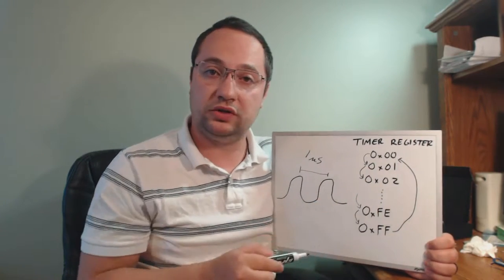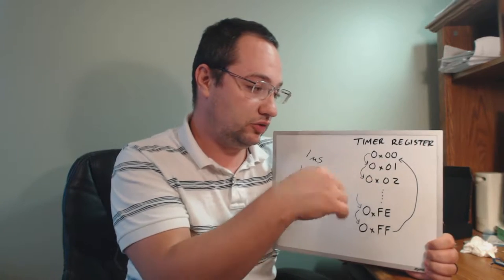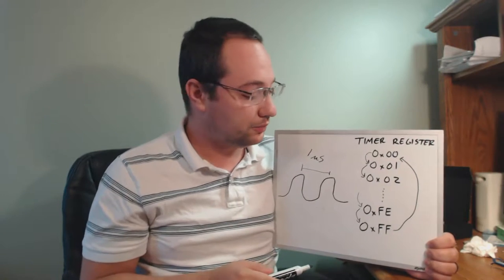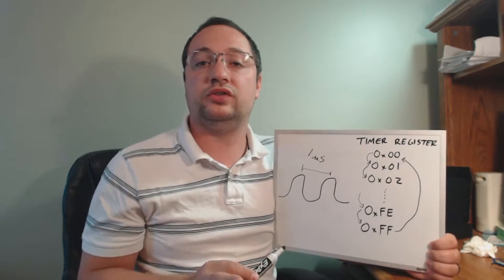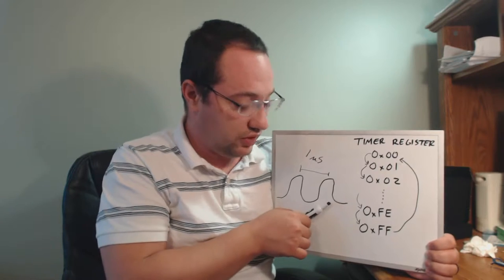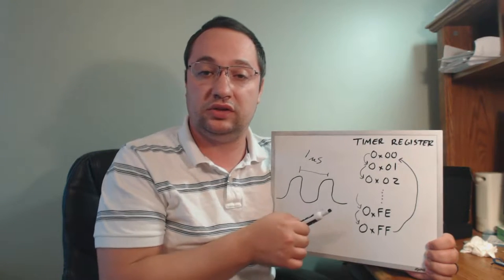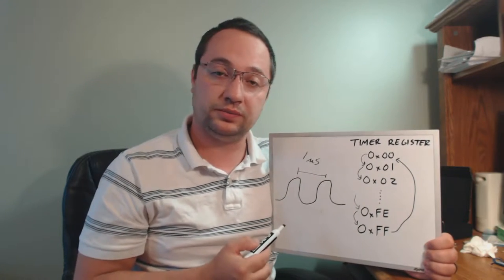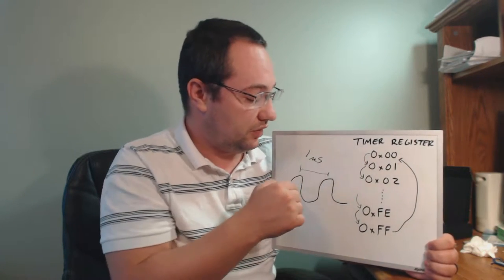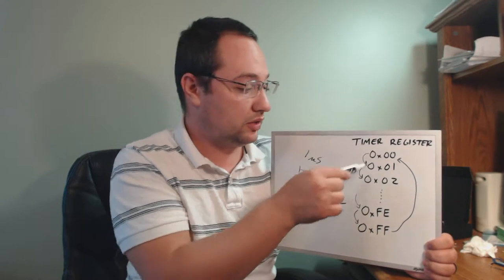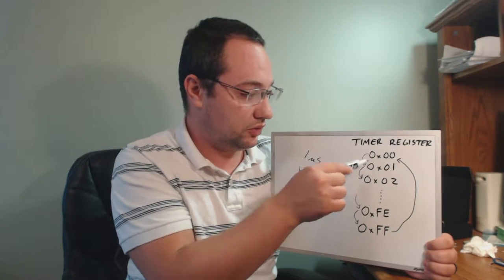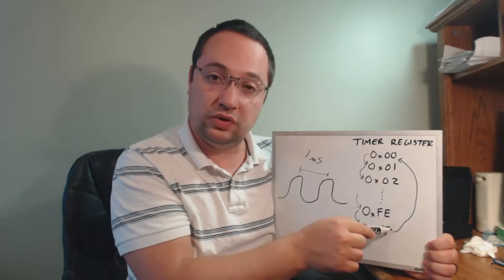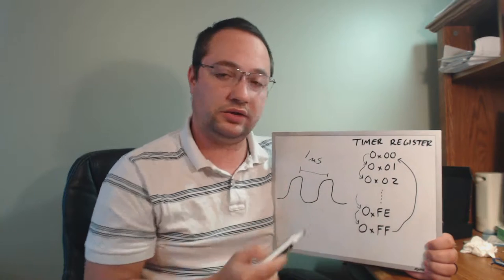So get used to seeing this in this format. Eventually you will get to 0xFE, and then 0xFF. And 0xFF is the largest number that can be stored in an 8-bit number. So whenever you go to count the next one, the timer will actually roll over back to zero. And this rollover event is important, and I will tell you how it pertains to our situation in the next section.